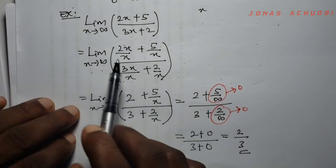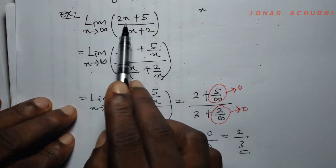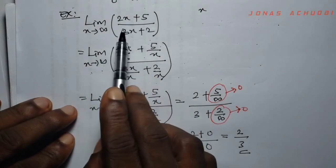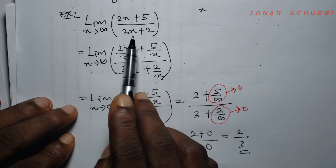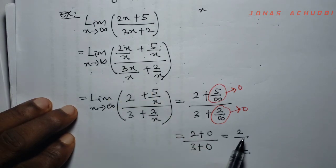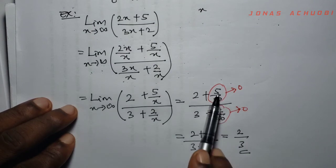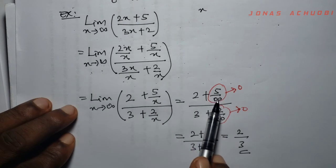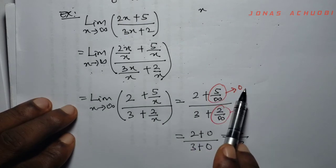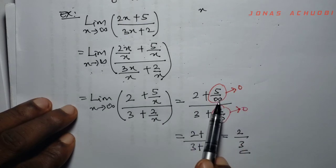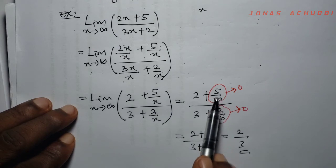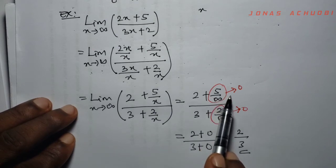So as x tends to infinity, the function (2x + 5)/(3x + 2) tends to the value 2/3. Please note: any finite number divided by infinity always turns to 0, because infinity is so large that dividing by it makes the value negligibly small.